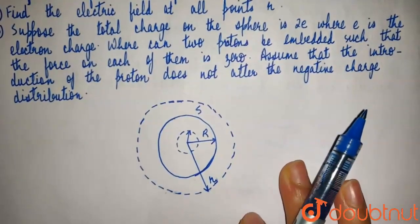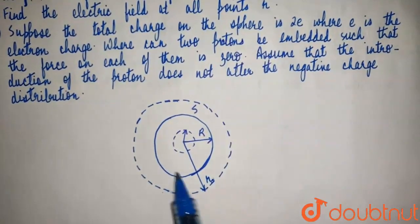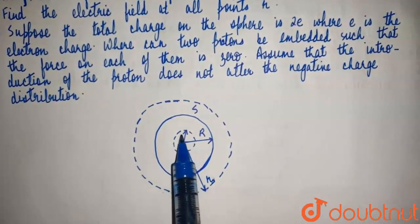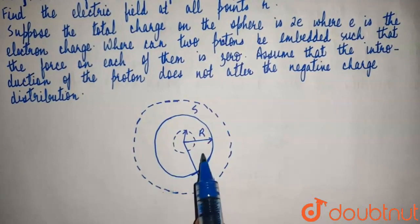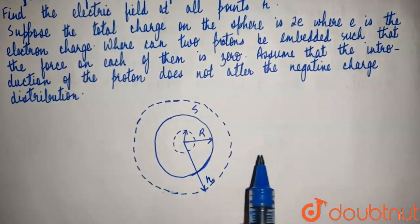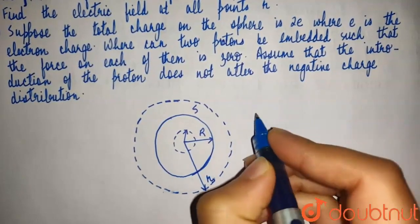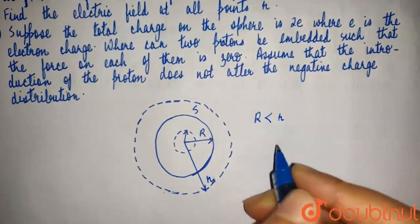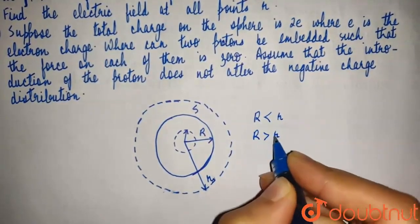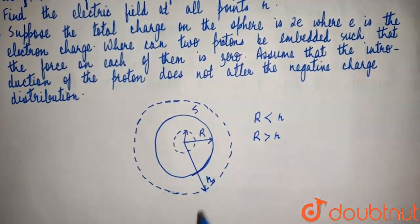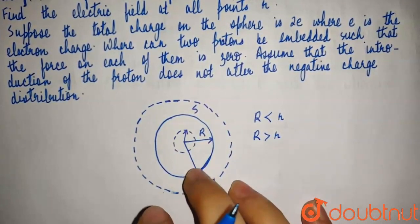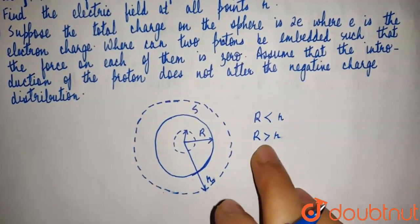For this, we have considered three spheres. The first sphere is our original sphere of radius R. One hypothetical sphere has a radius r less than R, and another hypothetical sphere has a radius r greater than R. We need to calculate the electric field at all points r — first at a distance inside, then at a distance outside.